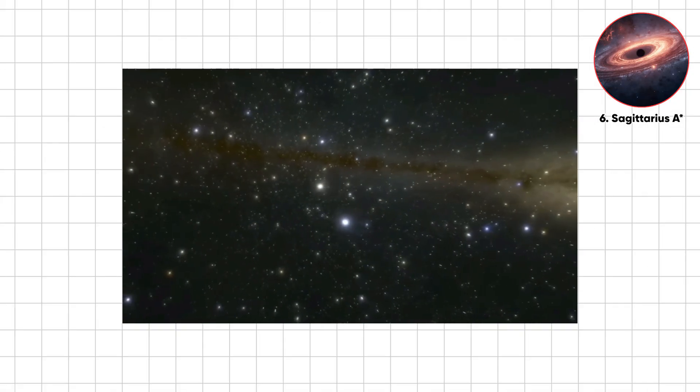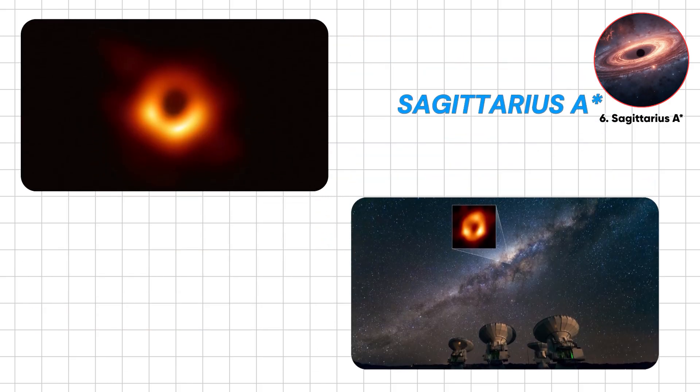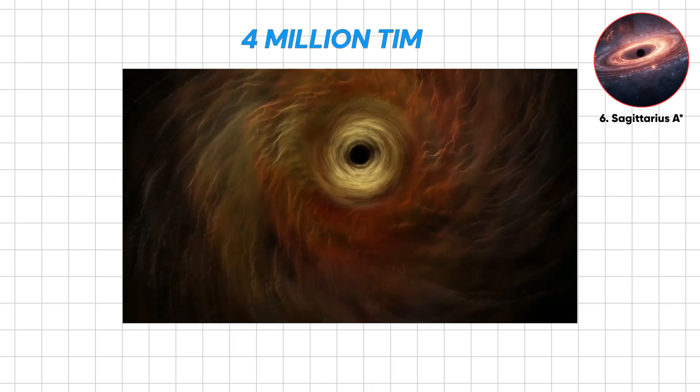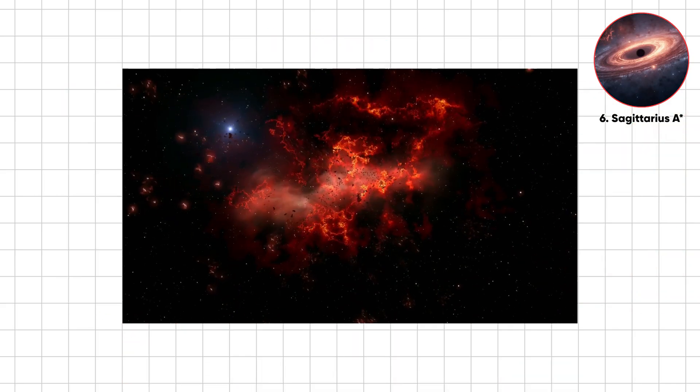At the very center of the Milky Way, 26,000 light-years away, lies Sagittarius A-Star, a supermassive black hole packed with about 4 million times the Sun's mass, squeezed into a space smaller than our solar system.